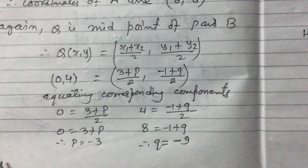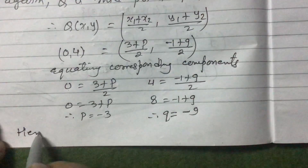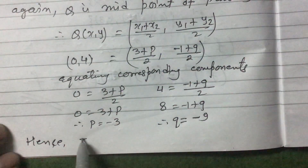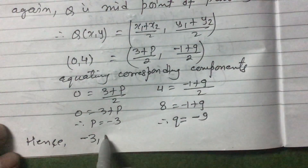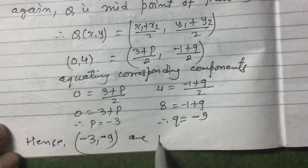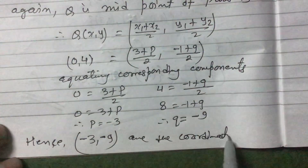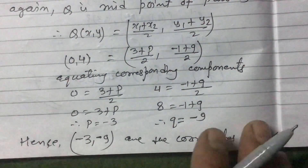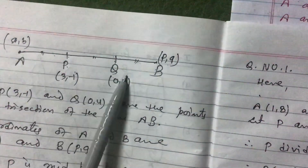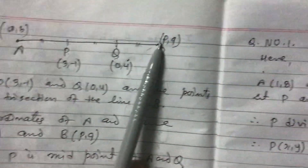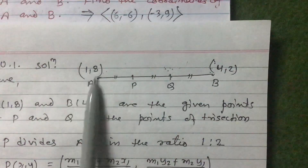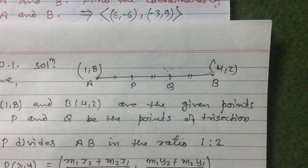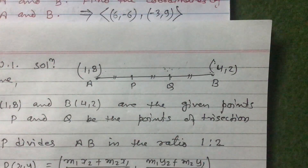Therefore the coordinates of B are (-3, -9). In this way, when the points of trisection are given, we can find the coordinates of A and B. Similarly, when A and B are given, we can find the coordinates of the points of trisection. Thank you for watching this video. If you have not subscribed, please subscribe so you can get the next videos also. Thank you.